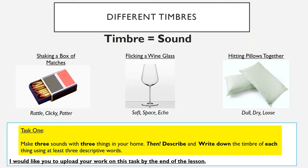And then lastly, hitting two pillows together. If I hit them, you'll hear it. I've described this as having a dull, dry and loose timbre. Understanding timbre is really effective because a lot of music producers use that understanding to create songs. For example, when you hear a bass drum sound, many producers actually use pillows hit together to get that bass sound if they don't have a bass drum at hand — it creates a similar timbre. So understanding timbre is a really effective way of creating a song.